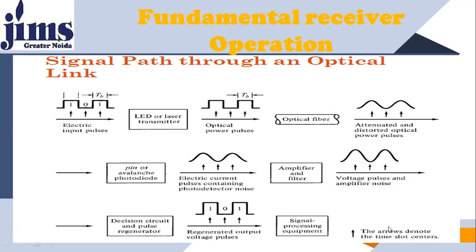After further processing, we get the message signal. Normally, message signals are sinusoidal or random-type signals, since information is always a random-type signal. This is the whole story of optical communication: the photodiode, amplifier, filter, and decision circuit blocks belong to the optical receiver; the optical source belongs to the optical transmitter; and the optical fiber acts as the channel.